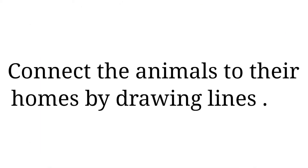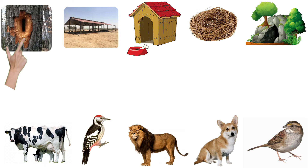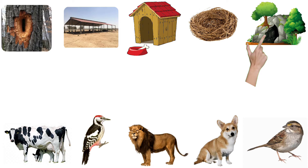Let's start. Connect the animals to their homes by drawing lines. Here they have given wooden hollow, cow shed, kennel, nest and cave. And on another side, they have given cow, woodpecker, lion, dog and sparrow.